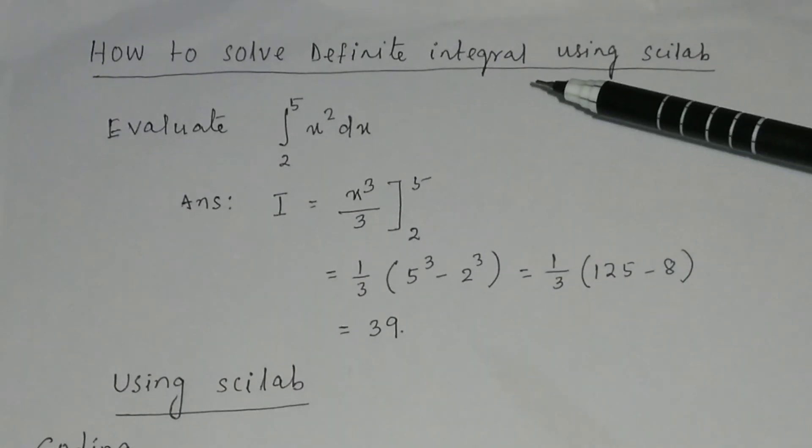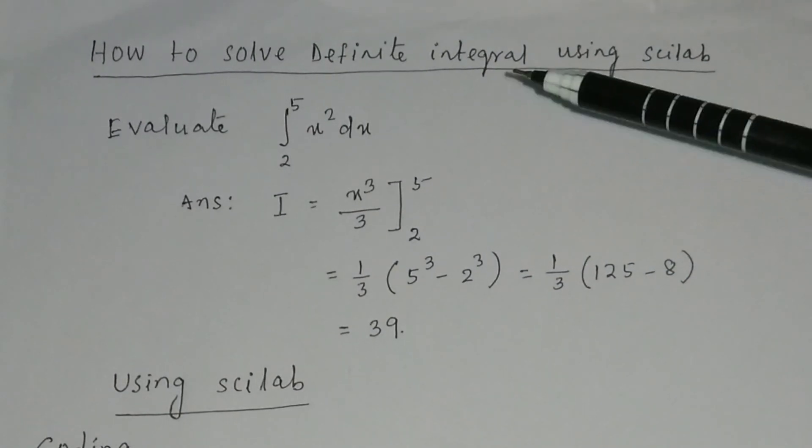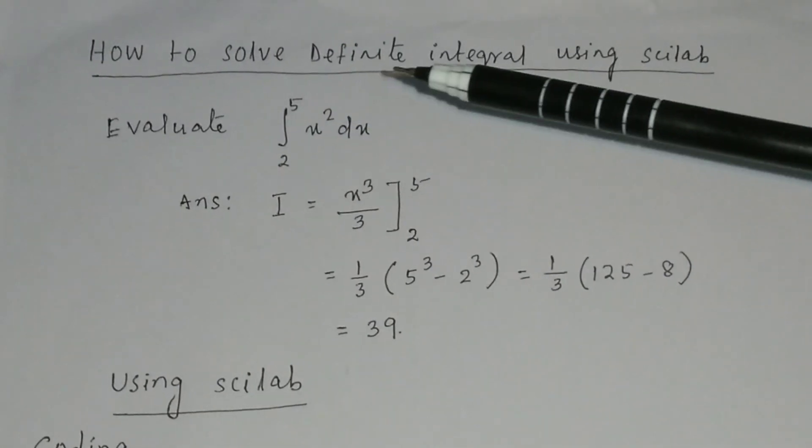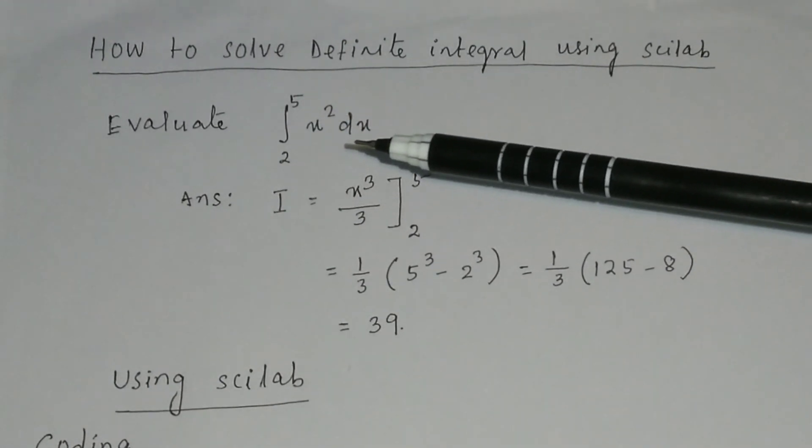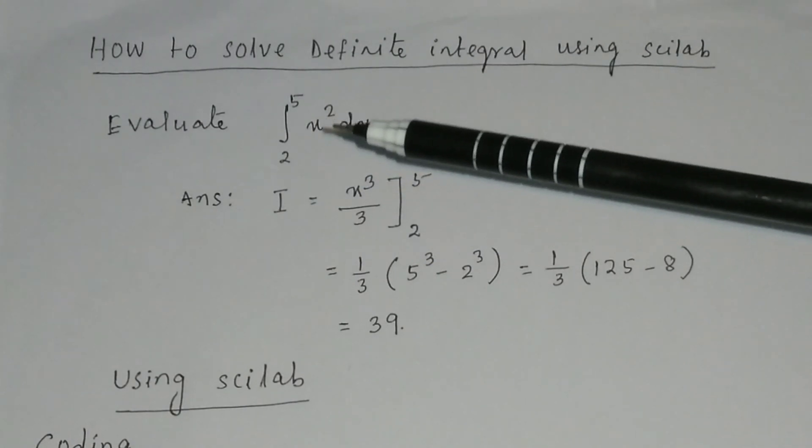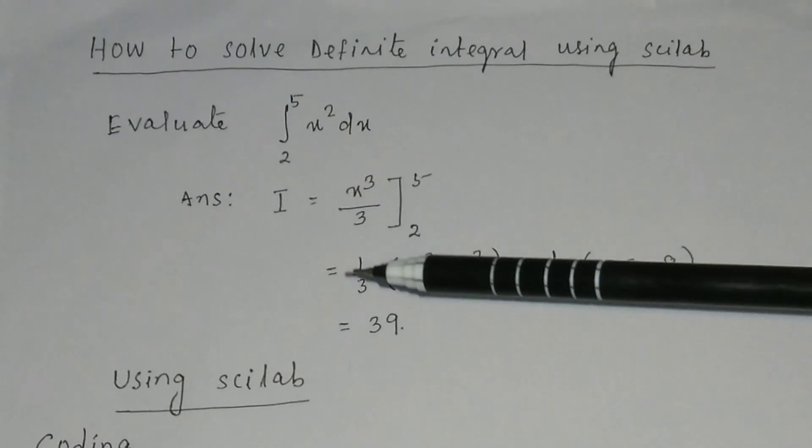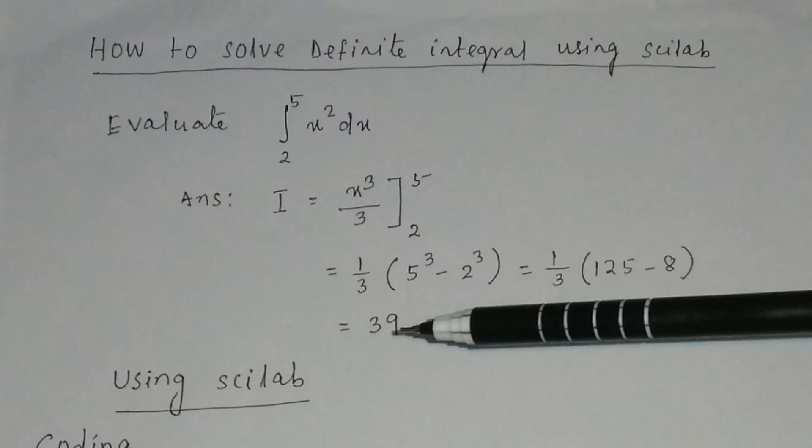How to solve definite integral using Scilab? Suppose you are given an integration to evaluate: integration of x square dx from 2 to 5. If you integrate it, then the result will be equal to 39.